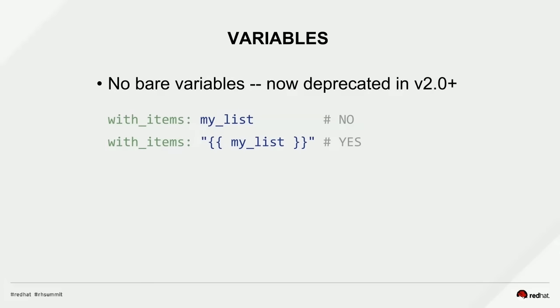Another thing is to not use what we call bare variables. This is now deprecated in version 2.0 — if you've written a playbook this way you'll see a warning. The core developers had to guess in the old approach that you mean something is a variable and not a string. In the correct approach, you wrap it in mustaches and quotes, so they know you mean a variable. They don't think guesswork is a good idea in software, so they want to discontinue that practice.